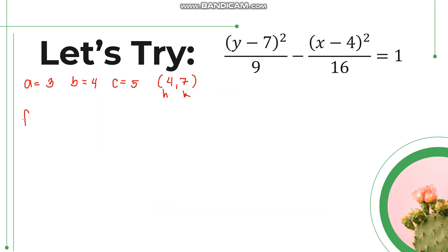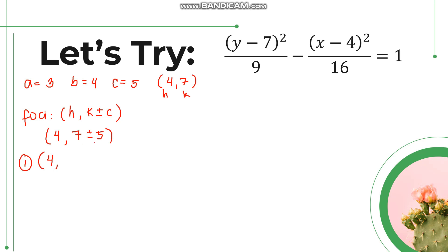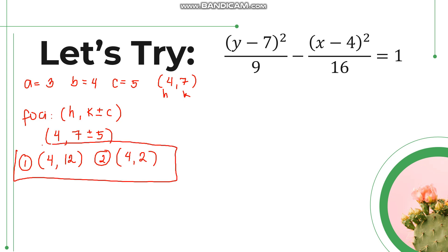We can now identify the foci. Since the transverse axis is vertical, we use (h, k ± c). With h = 4, k = 7, and c = 5: the first focus is (4, 7 plus 5) = (4, 12), and the second is (4, 7 minus 5) = (4, 2).